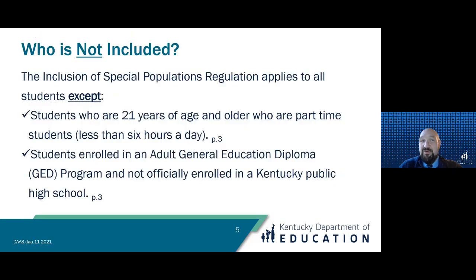Now we've talked about who is included — now we need to talk about who is not included. Most students are covered in this regulation in some way. However, there are some groups of students that this regulation does not represent. Those are students who may age out at 21 years of age or older; students considered part-time students who may be enrolled in a Kentucky public school six hours less per day; and students who are enrolled in a general education program or GED that is not part of a Kentucky public school system.